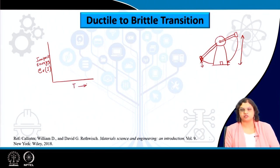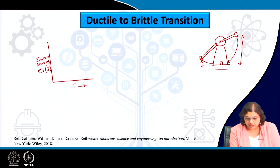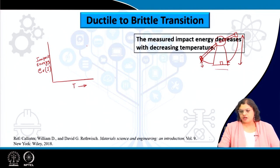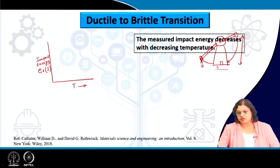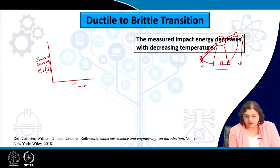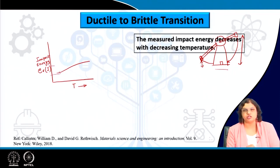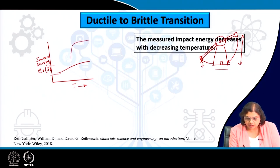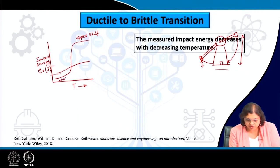If we carry out such tests at different temperatures, we can see how the energy varies with temperature. Typically, the measured impact energy decreases as temperature decreases. In some cases we see a very distinct S-shaped curve, with a distinct upper shelf absorbing much higher energy, and a lower shelf where fracture occurs at much lesser energy.